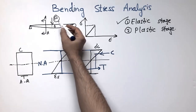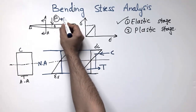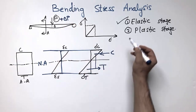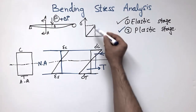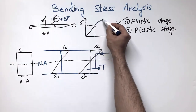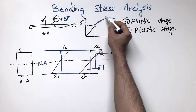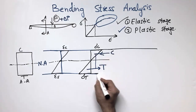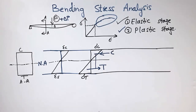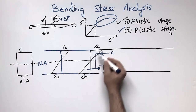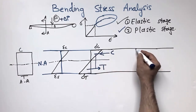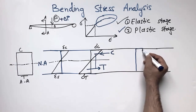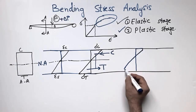Now let's consider that the load is increasing — I can represent this as P plus delta P. As this load increases, we are going into the plastic stage of the beam. What happens to the cross-section is that the stresses, which were linear before, are no longer linear. They become plastic at the outer regions and remain linear in the middle — similarly on both the compression and tension sides.